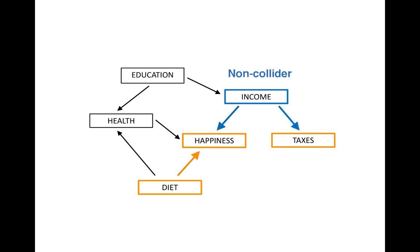In contrast, income is a non-collider on this path because there are no arrowheads to collide at income. In this case, income is a direct common cause of happiness and taxes, and common causes are non-colliders.